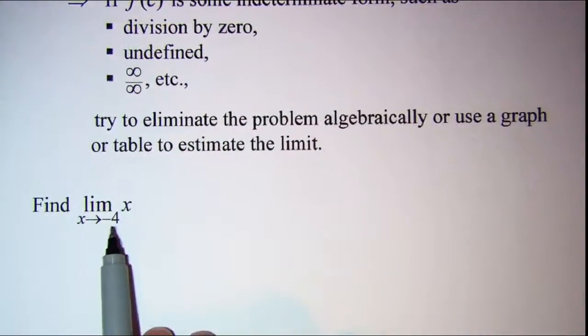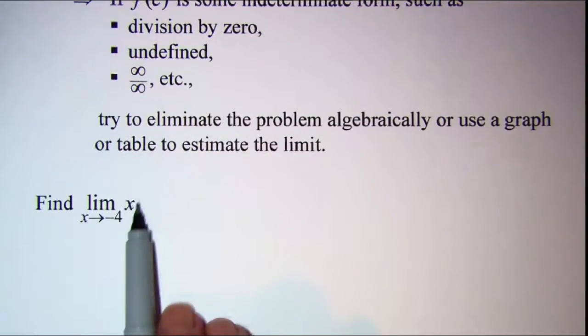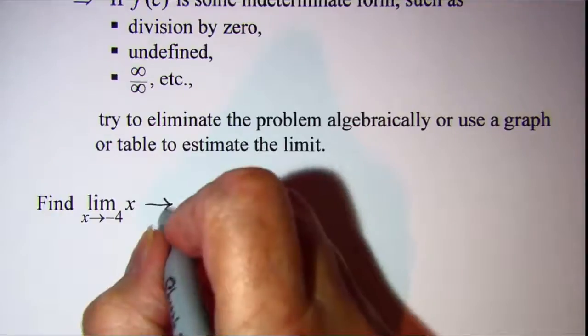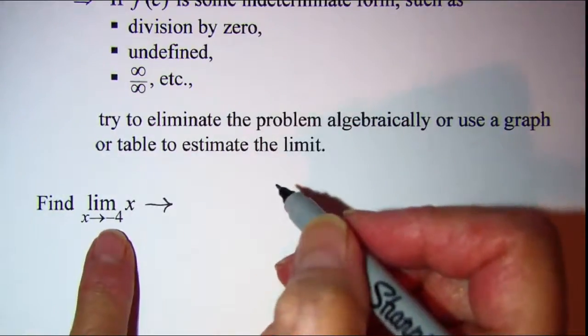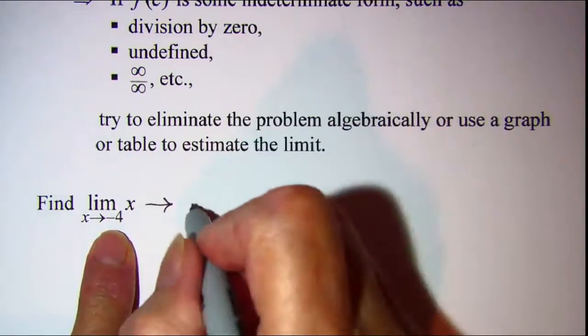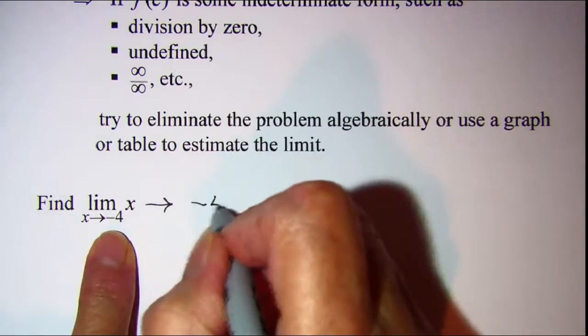Another example. Here we have our x visible, so we're just going to use direct substitution. We'll put negative 4 in place of x, so the answer is negative 4.